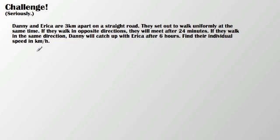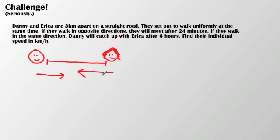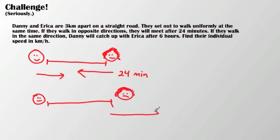Danny and Erica are 3 kilometers apart on a straight road. So here's Danny, and here's Erica. They are 3 kilometers apart on a straight road. They set out to walk uniformly at the same time. If they walk in opposite directions, they will meet after 24 minutes. If they walk in the same direction, Danny will catch up with Erica after 6 hours. Find their individual speed in kilometers per hour.